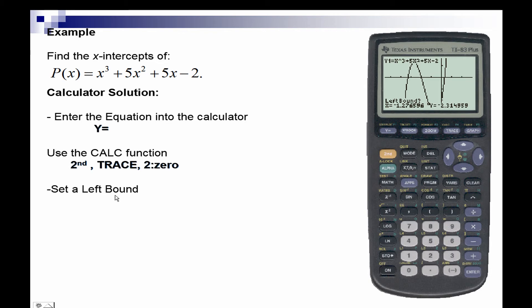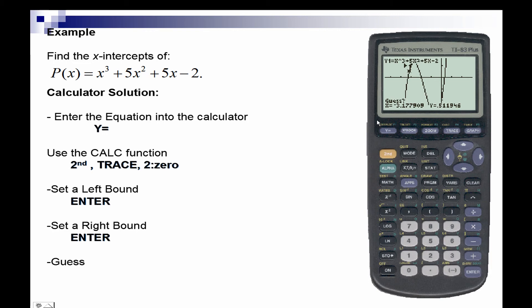Now we'll set a left bound. There are three intercepts, so we'll calculate the first or leftmost intercept. I'm going to physically place my cursor to the left of the zero and press enter. Notice that it pops up a sideways triangle, and now it asks for a right bound. I'll move to the right of my zero and press enter — the sideways triangle should appear to the right of your zero. For guess, we simply hit enter, and the x-intercept for this function is negative 3.3.